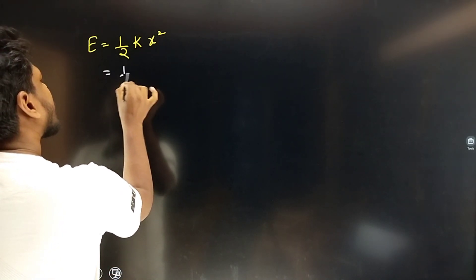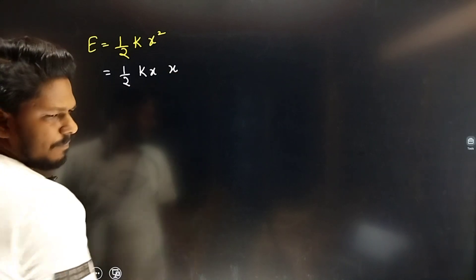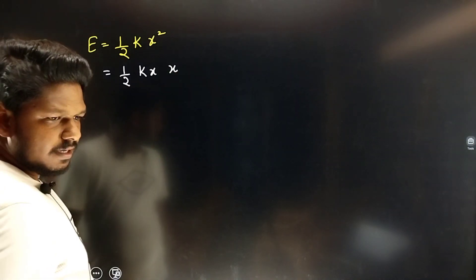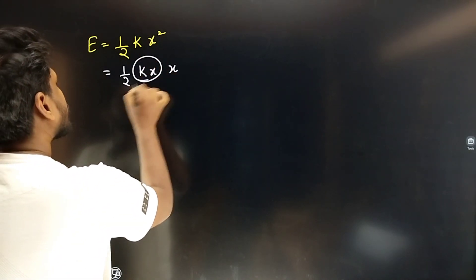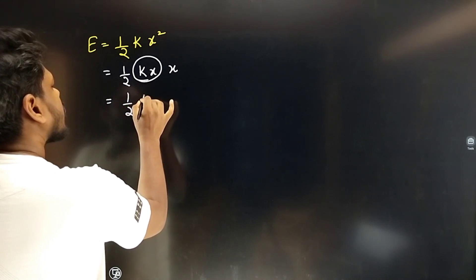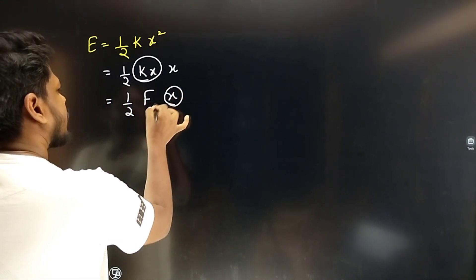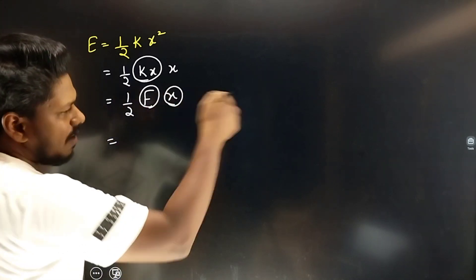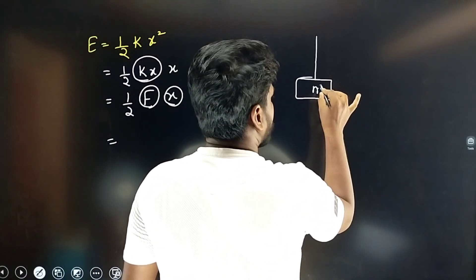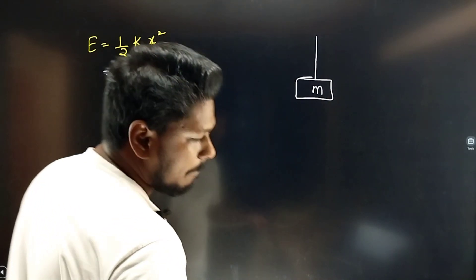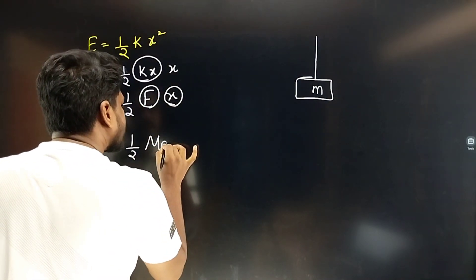Here kx² — kx is the force and x is the extension. So the force is M into G, giving us half MG. The initial length is L, the final length is L plus delta L, and the change in length is delta L. You can substitute these values.